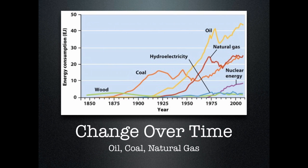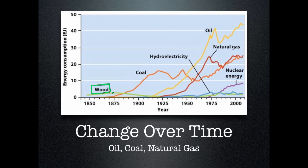It's important to talk about how energy usage changes over time. Looking at America's pattern, we start out with wood, which most countries use as they begin developing because it's readily available and requires no processing. Wood was America's major energy source until around 1875, when we were in the middle of the Industrial Revolution and learned to mine coal for use in factories and homes. Coal production and usage then took off and remained our major energy source for a long time.